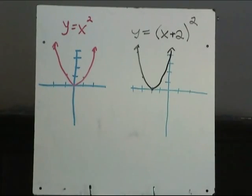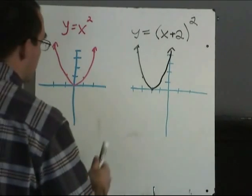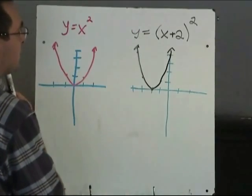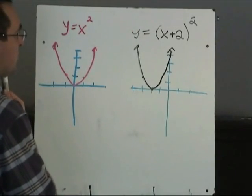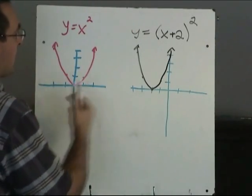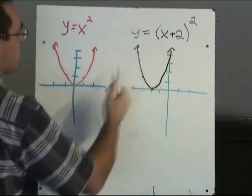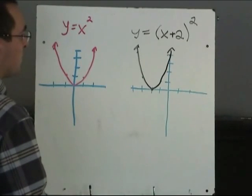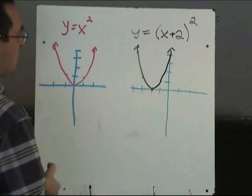These are called horizontal translations. So in the first example, when we replace x with x minus 2, the graph moved right 2. And when we replace x with x plus 2, the graph moved left 2.